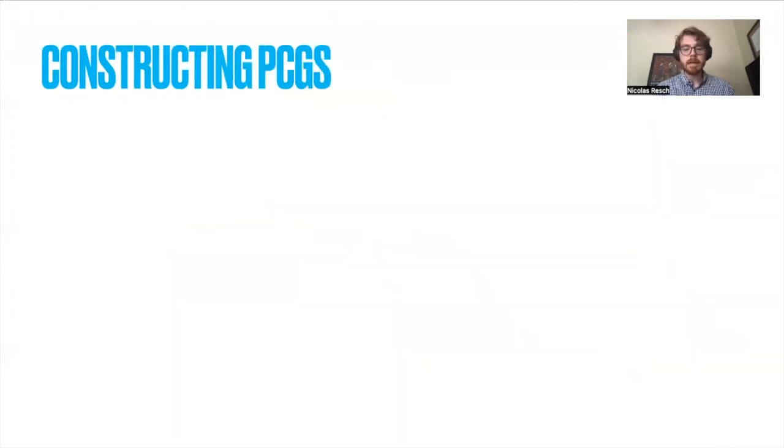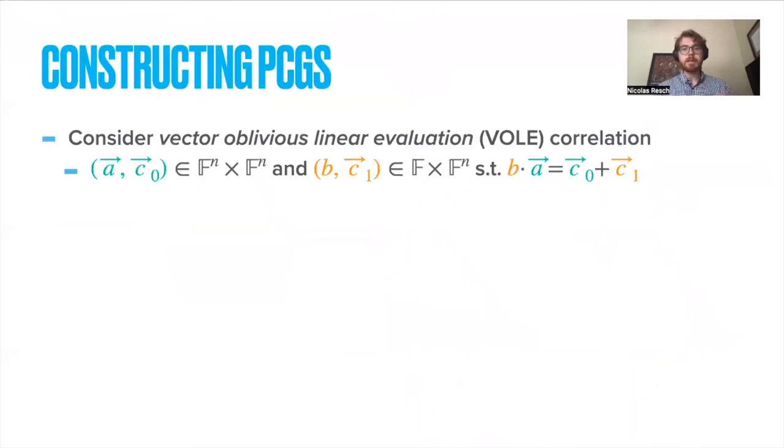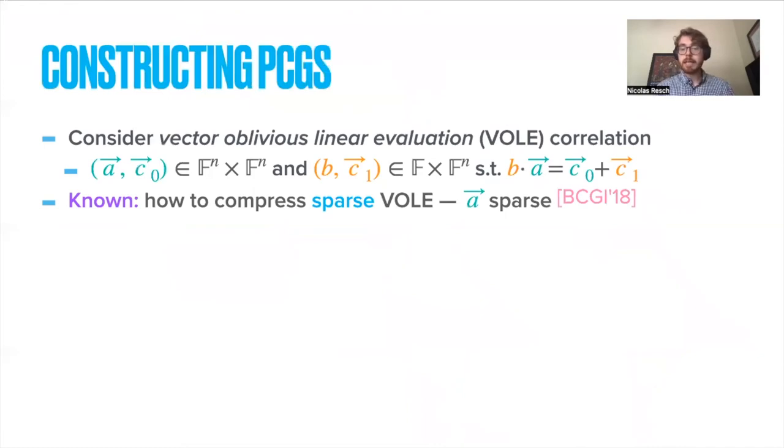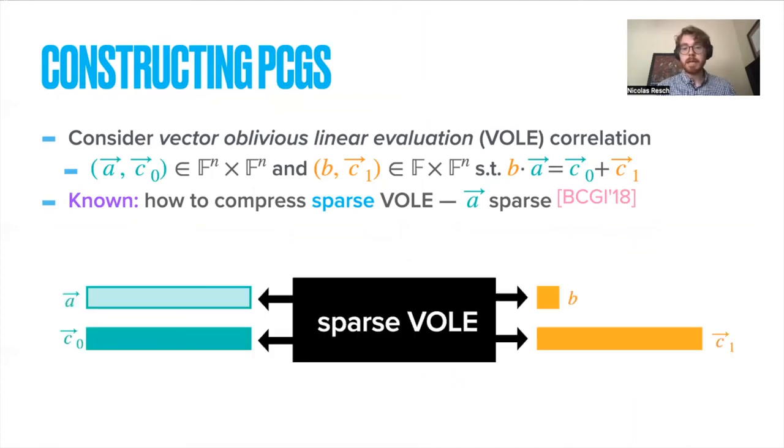Let me give a brief hint as to how we could construct these things. Let's focus on what we call the VOLE correlation, which essentially means that Alice and Bob have an additive secret sharing of a scalar vector product. It's known how to actually compress this, so long as the vector a here that Alice receives is guaranteed to be sparse. We have some sort of black box which spits out vectors a, C0, C1, and b, satisfying b times a equals C0 plus C1. Furthermore, a is guaranteed to be sparse, but aside from that, they look uniformly random.